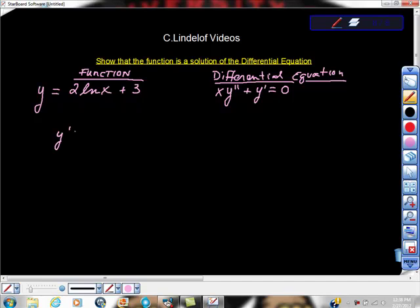I'm going to say y prime is equal to, well, what is the first derivative of this? It's two times the first derivative of ln of x, which is one over x. And the first derivative of three is zero. So y prime is equal to two over x.